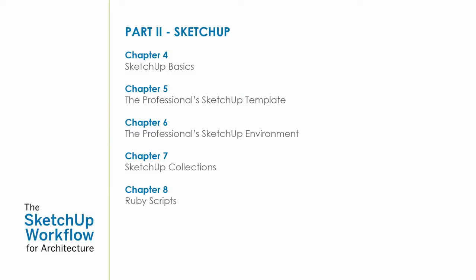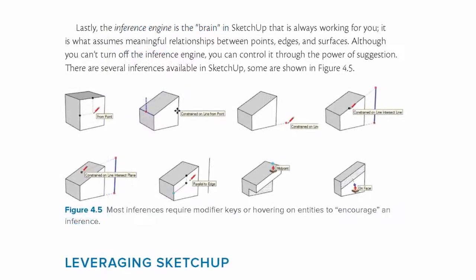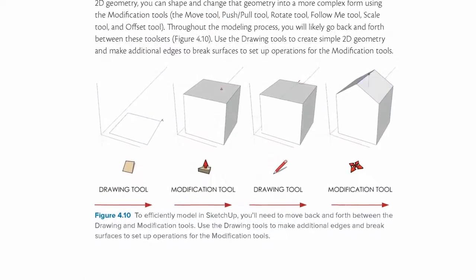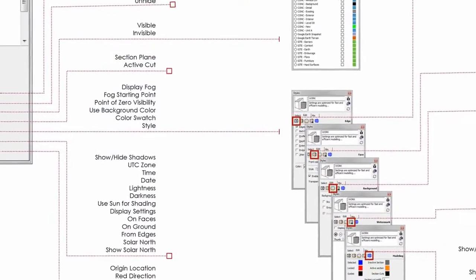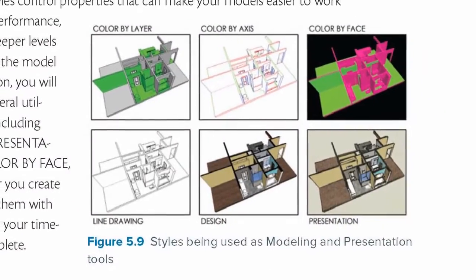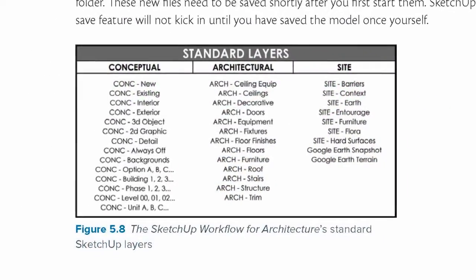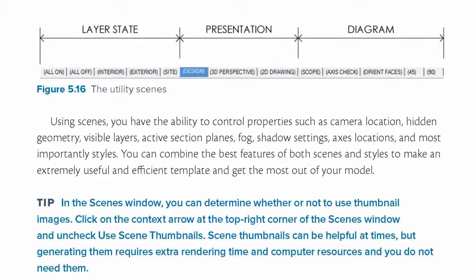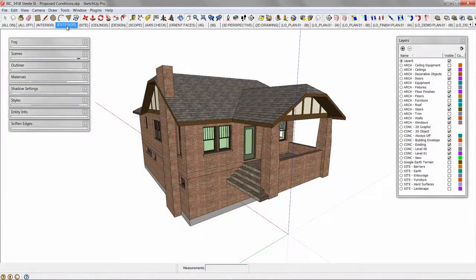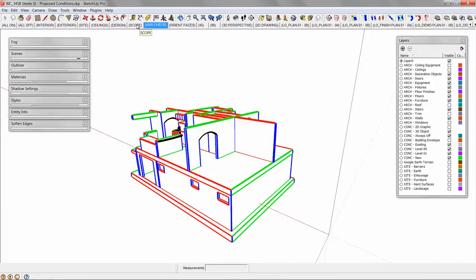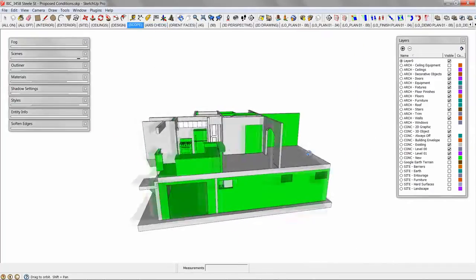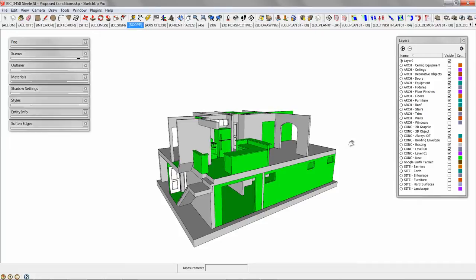In Part 2, you will start with an intermediate-level introduction to the tools, settings, and features included in SketchUp Pro. Advanced topics include best practices, modeling strategies, and most importantly a thorough explanation of groups and components, and layers, styles, and scenes. You will apply these new skills by creating utility styles and standard layers, and then attaching them to utility scenes to be saved with your own custom default template. Utility scenes allow you to toggle between layer states, presentation modes, and diagrammatic views of your model. The scope utility scene shows existing entities in gray and new entities in green, which is especially helpful when explaining the project scope to new members of the team.